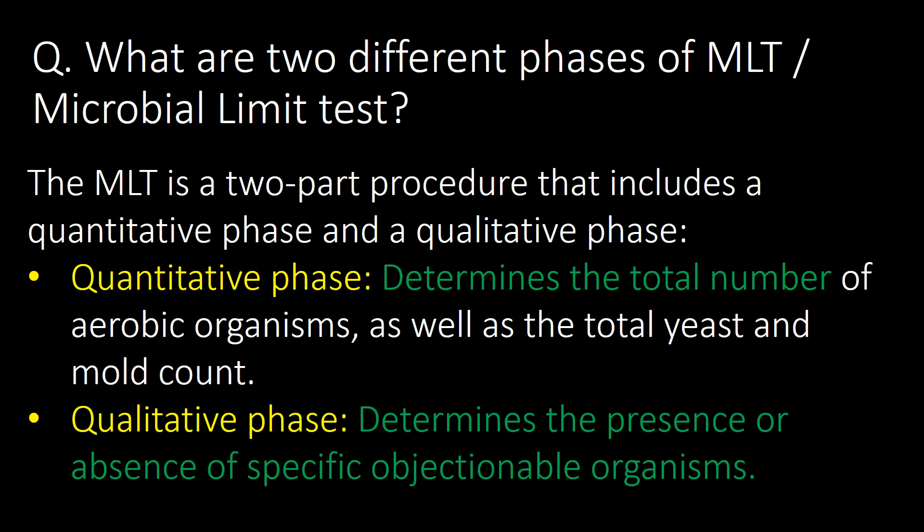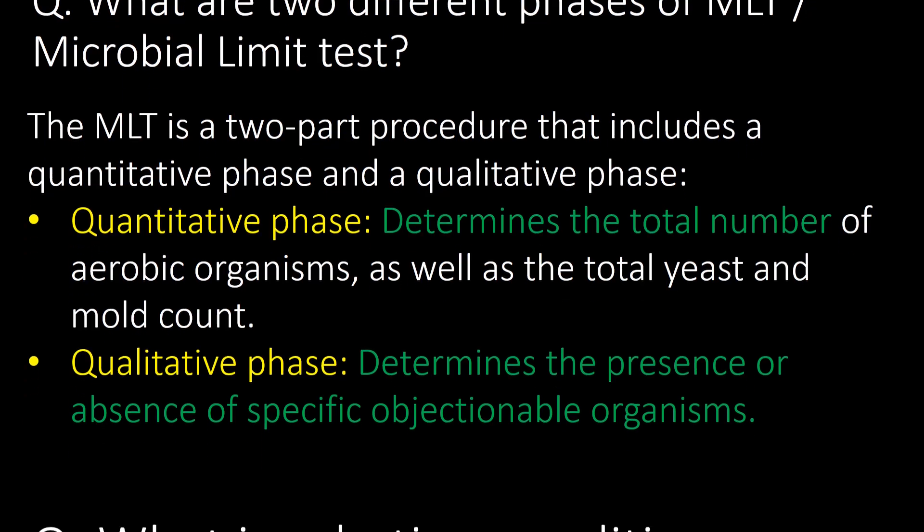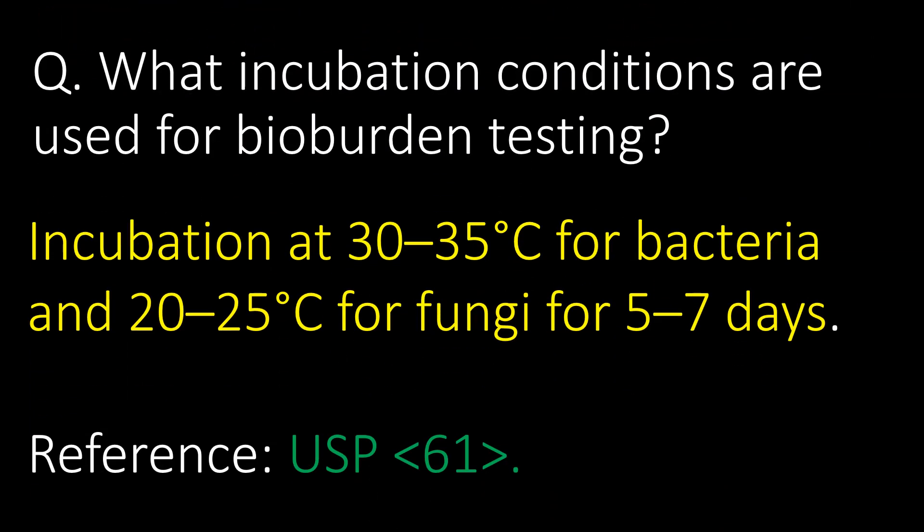The MLT includes a quantitative phase and a qualitative phase. The quantitative phase determines the total number of aerobic organisms as well as total yeast and mold count, whereas the qualitative phase determines the presence or absence of specific objectionable organisms.